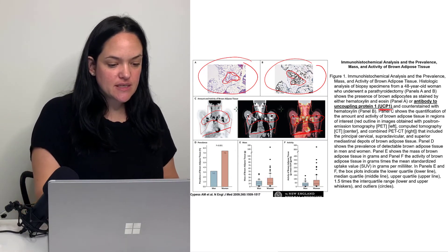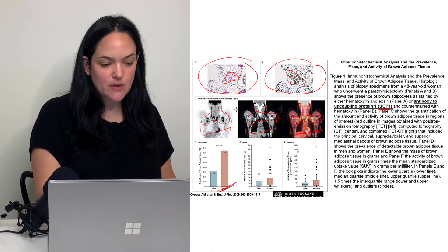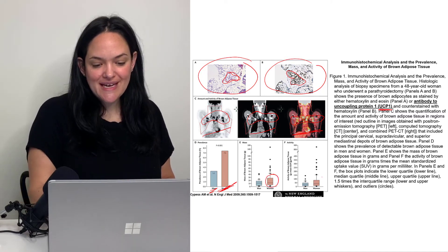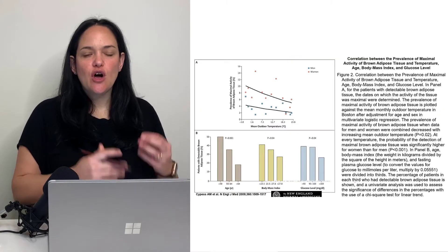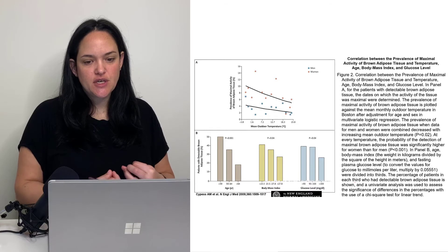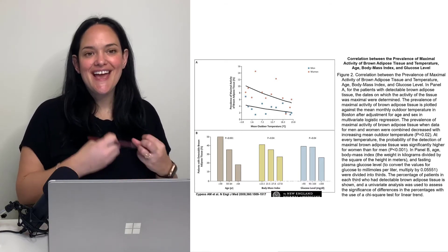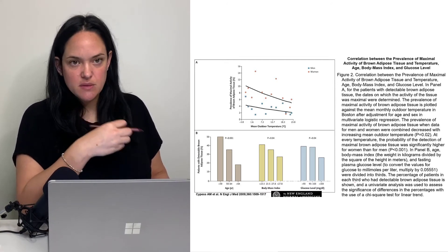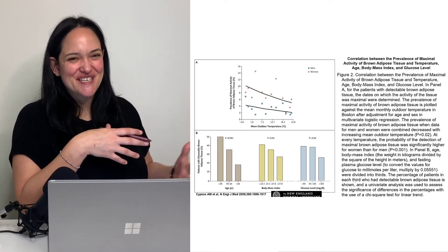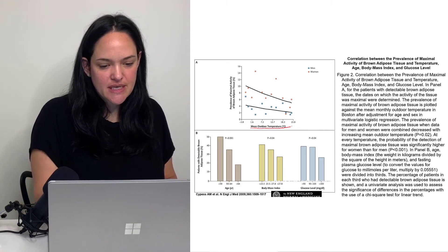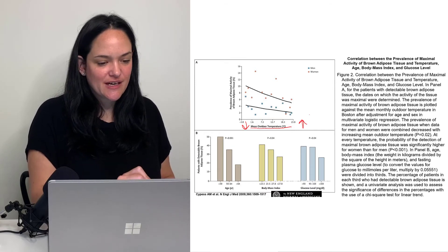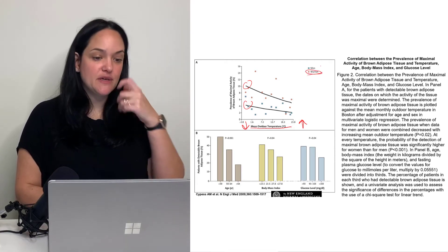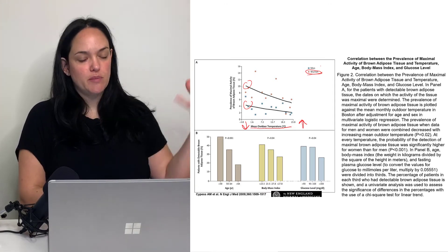The study found a significant difference in BAT between women and men — women tended to have more BAT and higher BAT activity than men. They also found an inverse correlation between the amount of brown adipose tissue activity and external temperature. Brown adipose tissue activity can be stimulated by cold exposure. Looking at mean outdoor temperature in Boston, the lower the temperature outside, the higher the activity of BAT — and this correlation was even stronger in women.